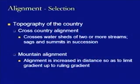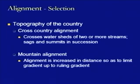Mountain alignment is the most demanding condition as far as gradients are concerned. The alignment is increased in distance because gradients cannot be fixed within the rolling gradient condition. If the rolling gradient is to be maintained, the length of the alignment will increase — for example, connecting a point at the top of a hillock to a point at the foot requires a circuitous route that stays within the rolling gradient but increases the alignment length.